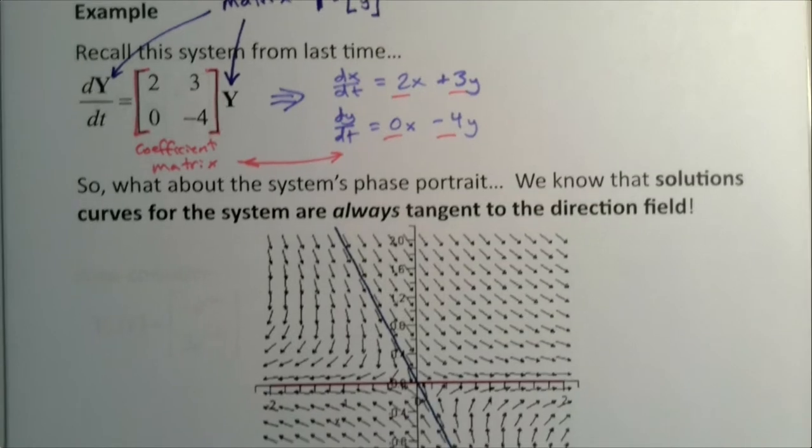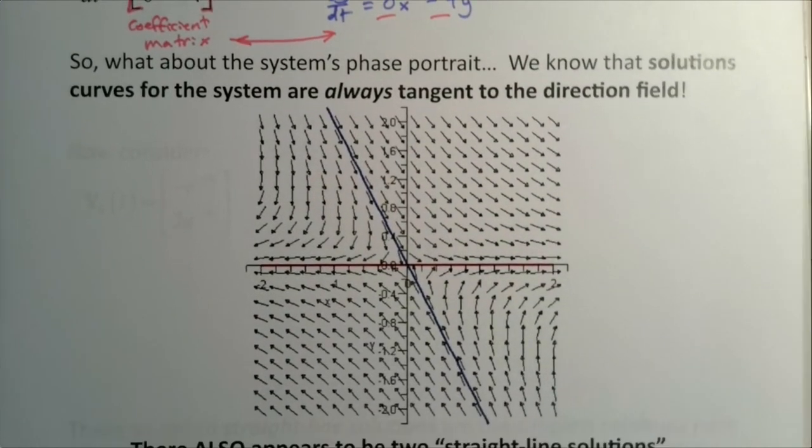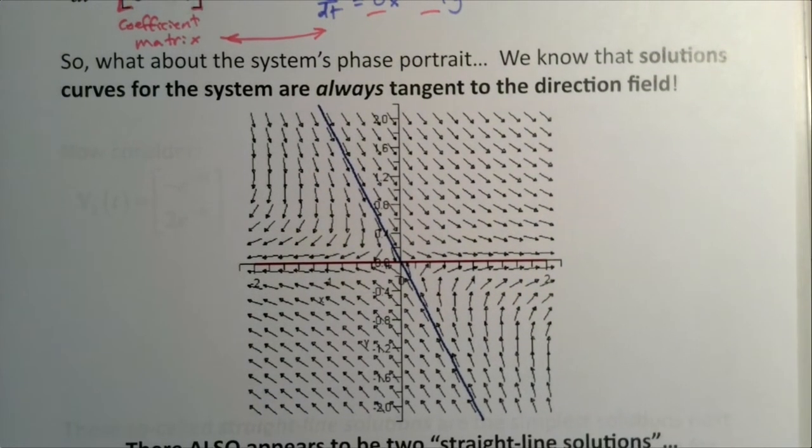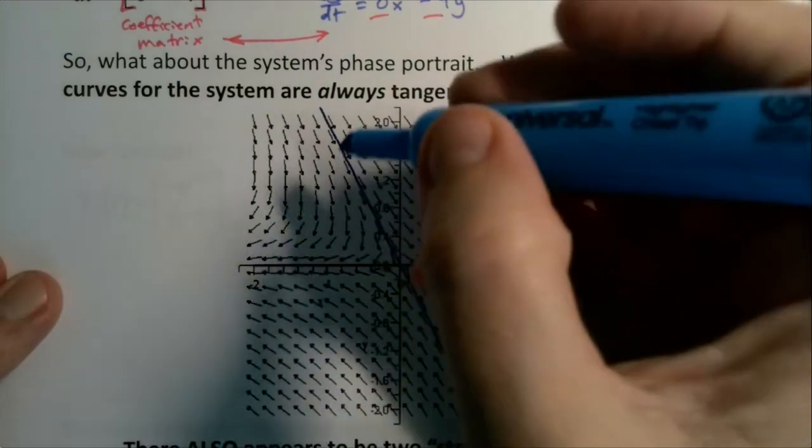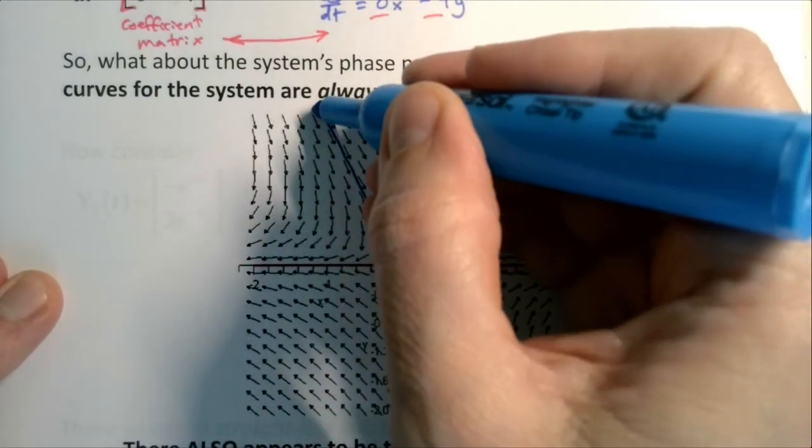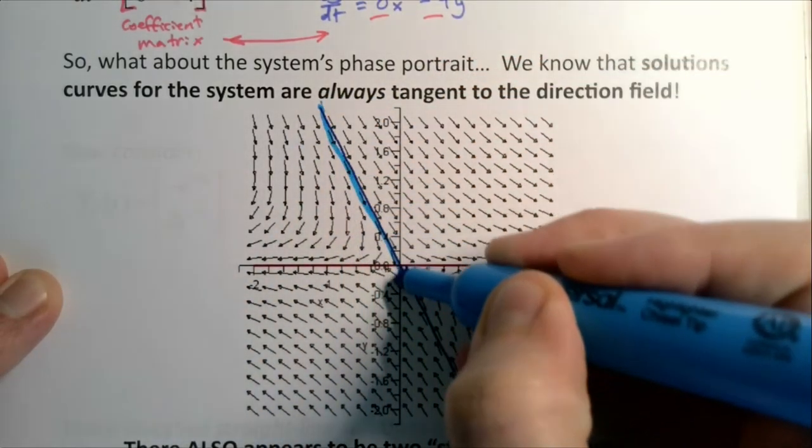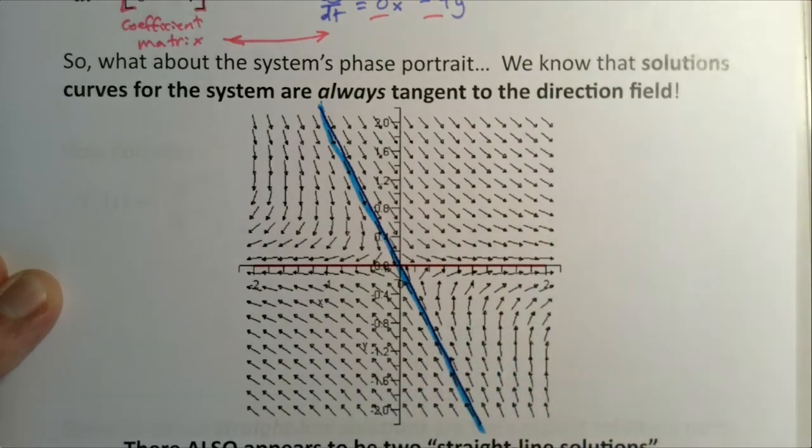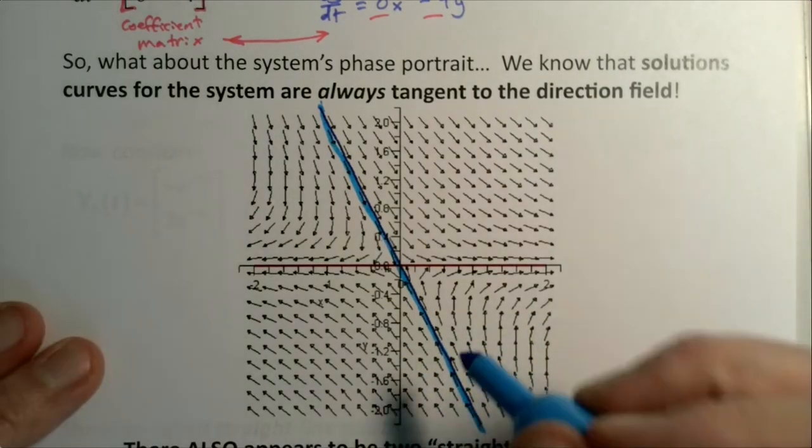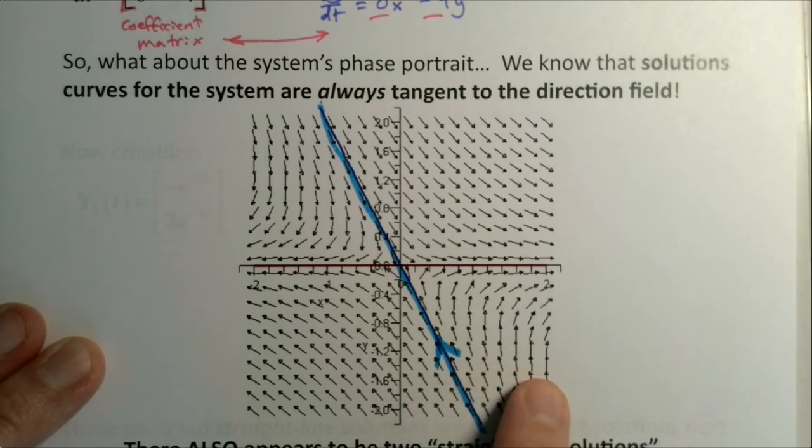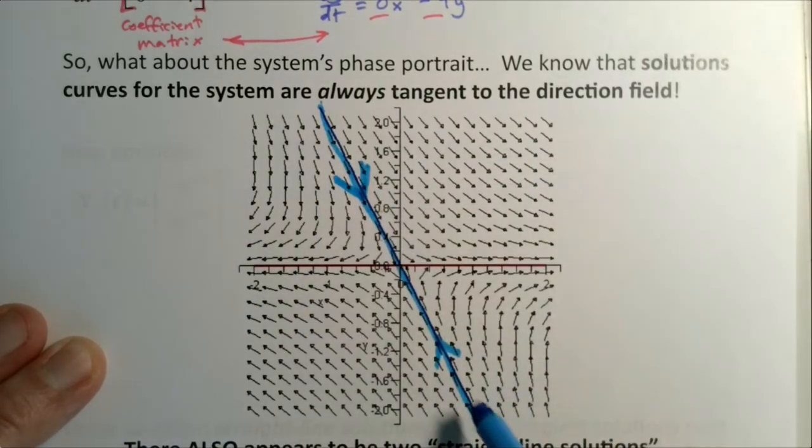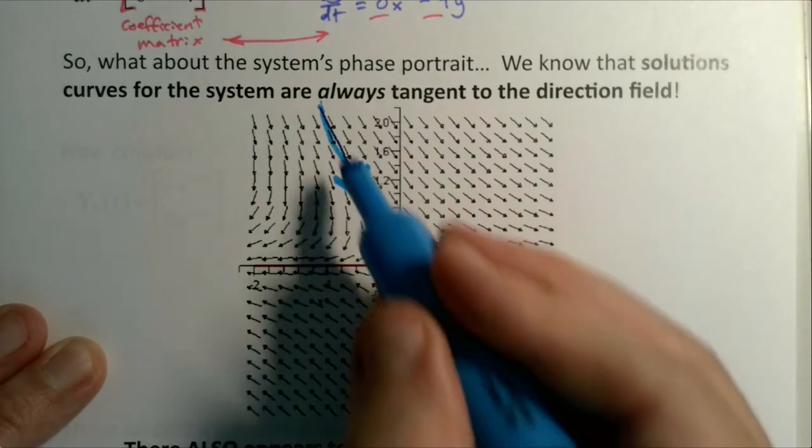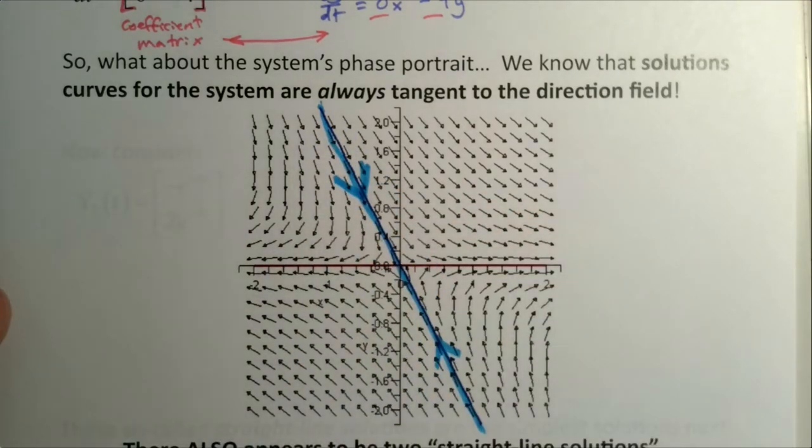It means that we know everything we need to know about this system of equations by just knowing those four numbers. Whatever we call the variables - whether it's x and y, or y and v, or a and b, or Fred and George - it doesn't matter. Those four values in the coefficient matrix determine everything about the phase plane. If you take a look at this thing's phase portrait, I've created a little phase portrait in Maple, and specifically I'm paying attention to two particular solutions.